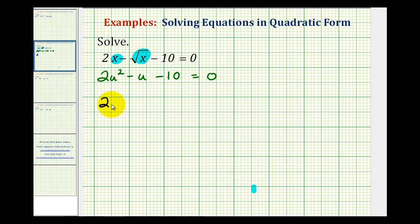So we're going to write this as two times the square root of x squared, which is equal to x, minus the square root of x minus 10 equals zero.